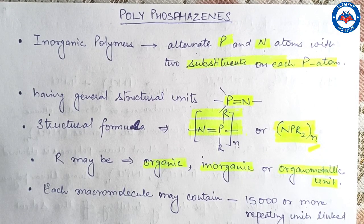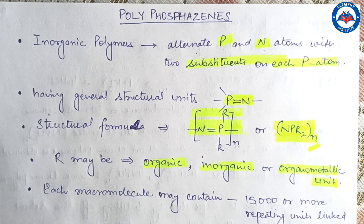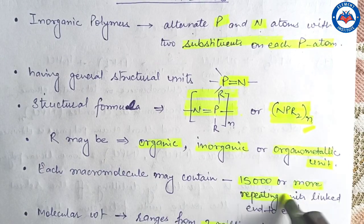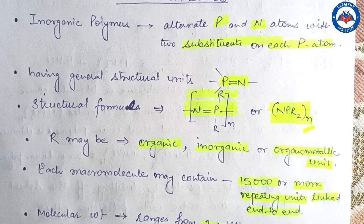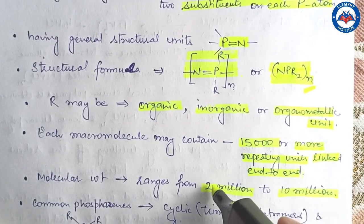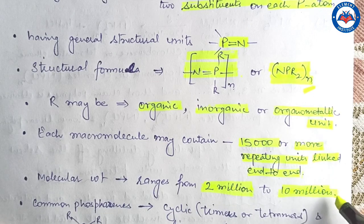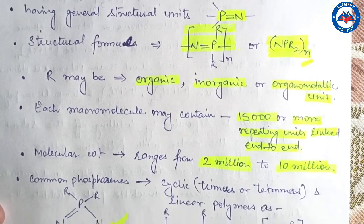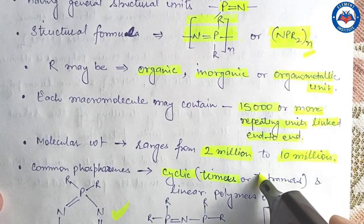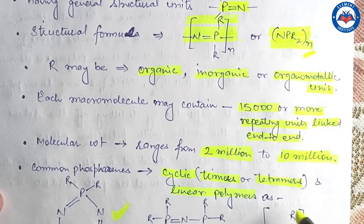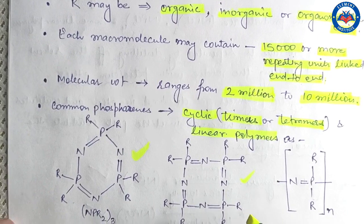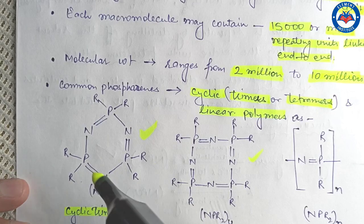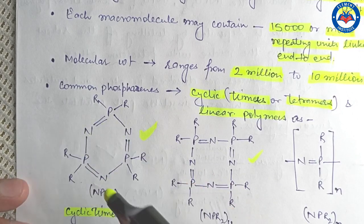Each macromolecule or polymer of polyphosphazene may contain around 15,000 or more repeating units linked end to end, and their molecular weights range from 2 million to 10 million. The commonly studied phosphazenes are the cyclic trimers, cyclic tetramers, and some linear polymers.